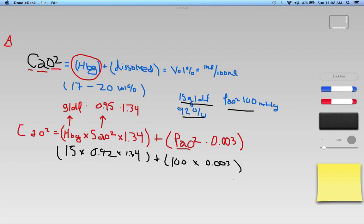And then I need to add my PaO2 is 100. So 100 multiplied by 0.003. So let's go ahead and just do the math real quick. I'm going to go 15 multiplied by 0.92, which gives me 13.8. And now I'm going to multiply that by 1.34. That gives me 18.5.